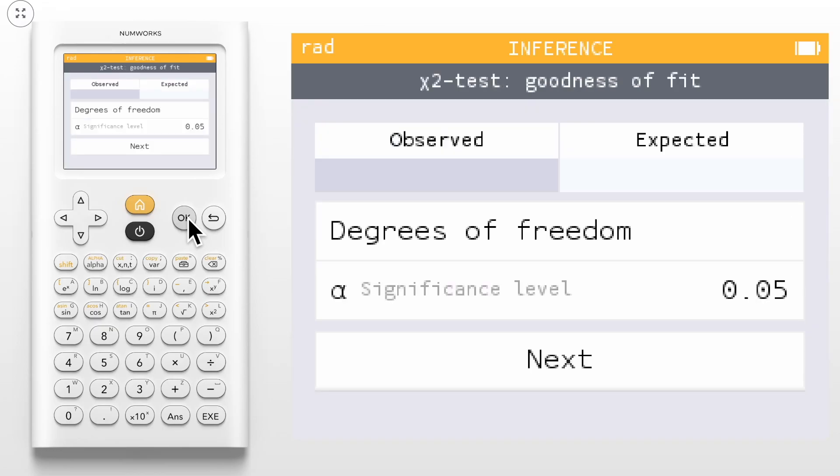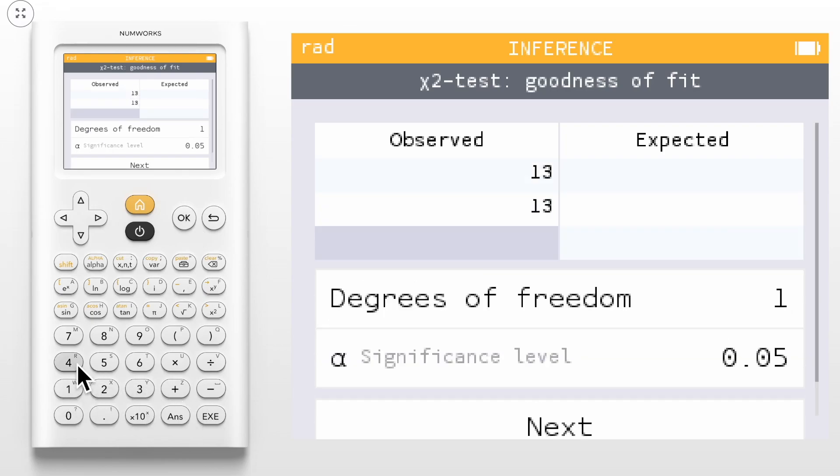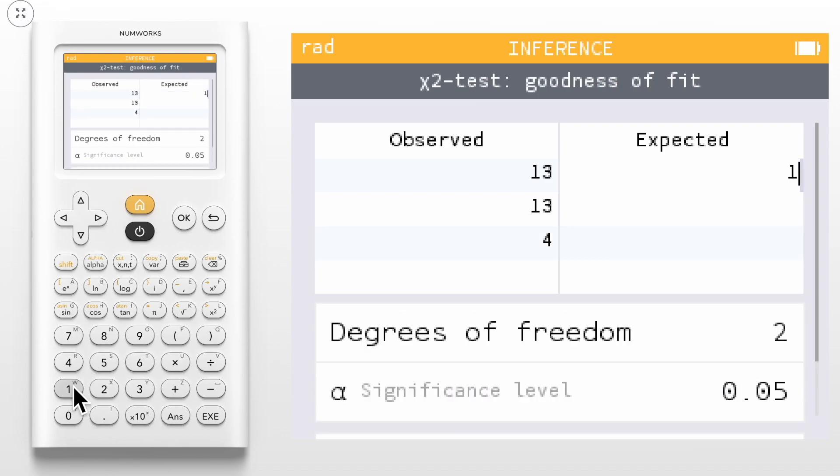The first step of your test is to enter your observed and expected values. For this example, our observed values are 13, 13, and 4, and for the expected values, we'll use 10, 10, and 10.